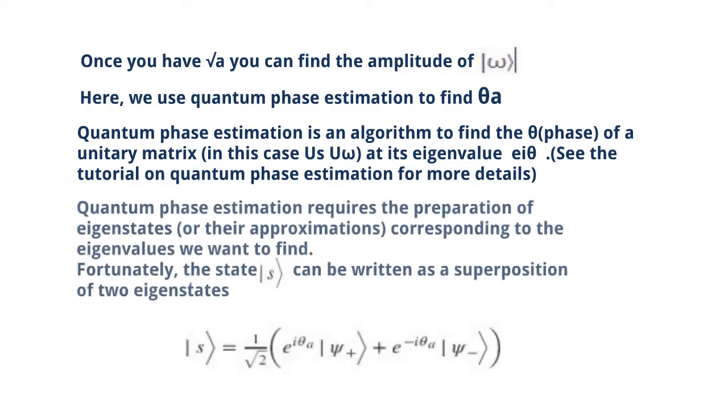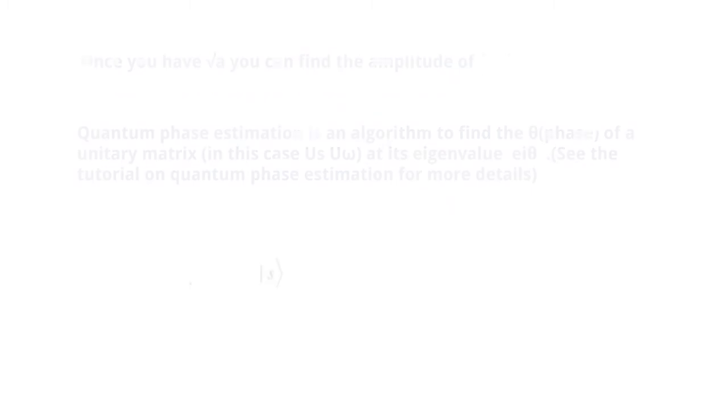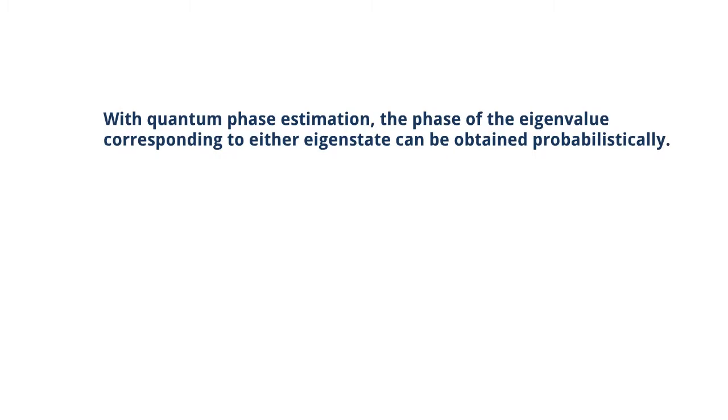Quantum phase estimation requires the preparation of eigenstates, or their approximations, corresponding to the eigenvalues we want to find. Fortunately, the state s can be written as a superposition of two eigenstates. With quantum phase estimation, the phase of the eigenvalue corresponding to either eigenstate can be obtained probabilistically.